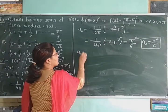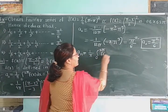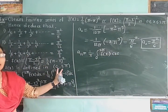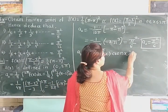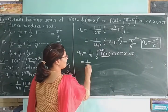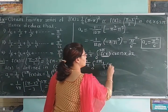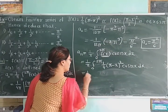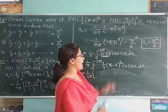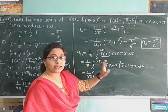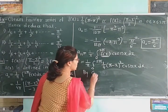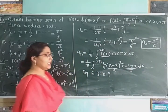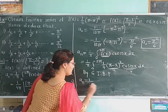Now we find Aₙ. The formula is Aₙ = (1/π) ∫₀²π f(x) cos(nx) dx. Substituting f(x), this becomes (1/4π) ∫₀²π (π − x)² cos(nx) dx. We take 1/4 outside as a constant. For the remaining integral of (π − x)² cos(nx), we apply generalized integration by parts, taking u = (π − x)² and v = cos(nx).